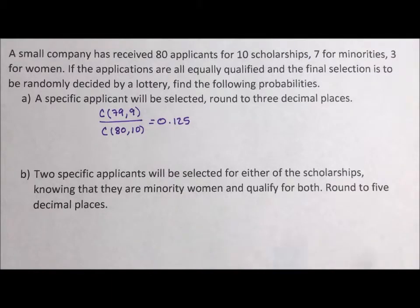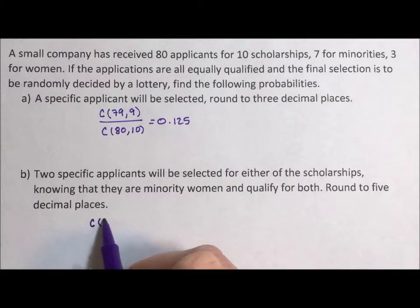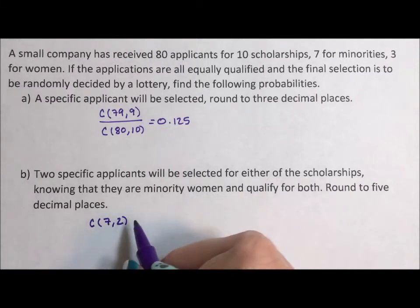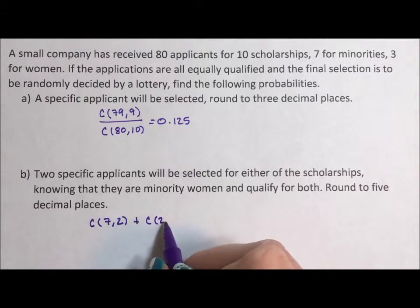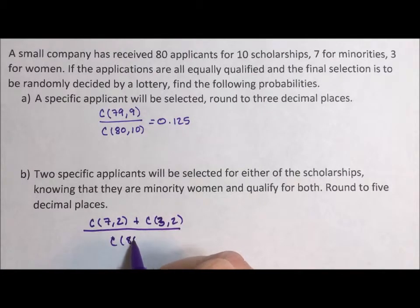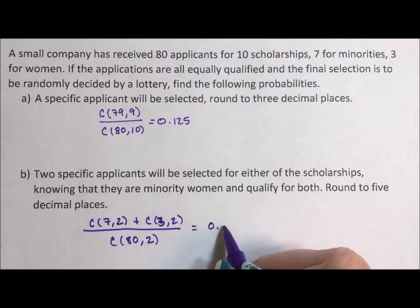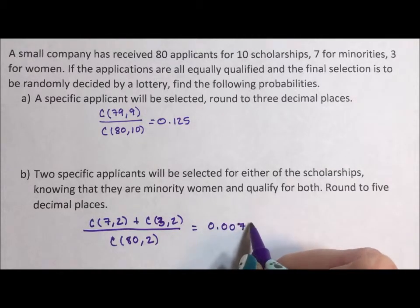Two specific applicants will be selected for either of the scholarships, knowing that they are minority women and qualify for both — round to five decimal places. So it's either that they're going to get two of the minority ones — combination because order doesn't matter — or they're going to get two of the ones for women, three taken two at a time. But we need to divide by the total: 80 taken two at a time, because we're only pulling the two applicants and looking at their probability of getting the scholarships. So this is 0.00759.